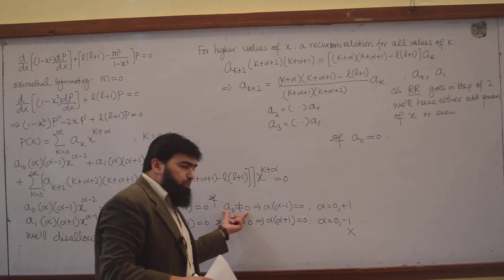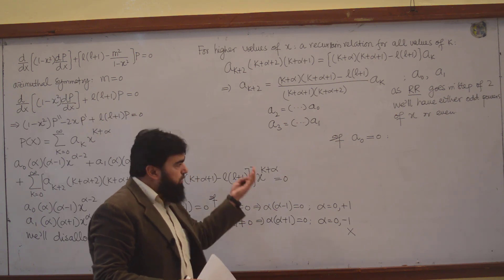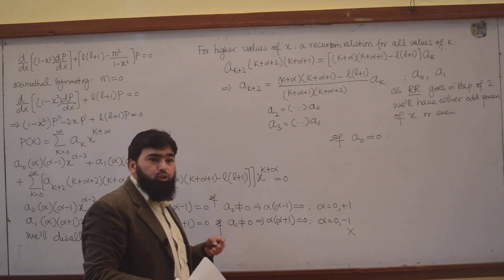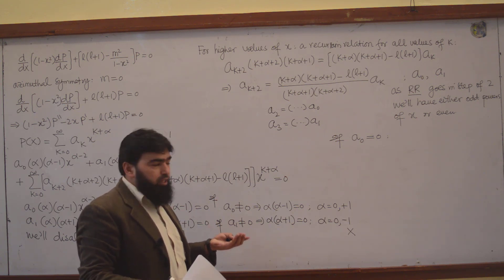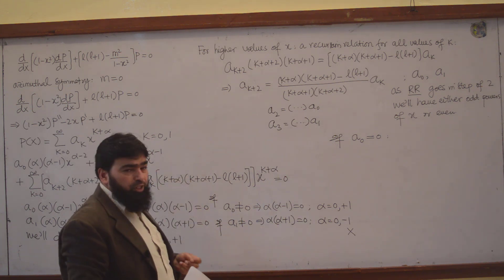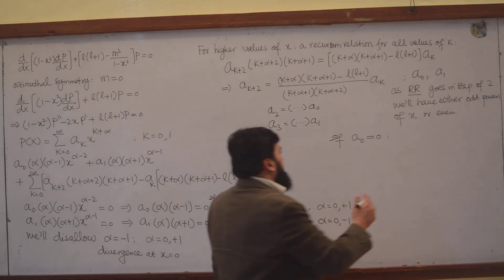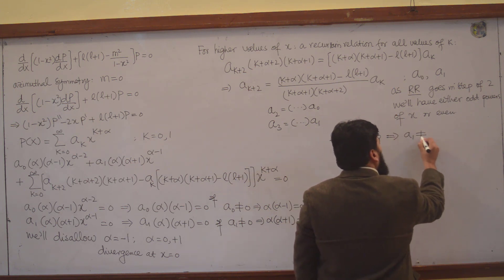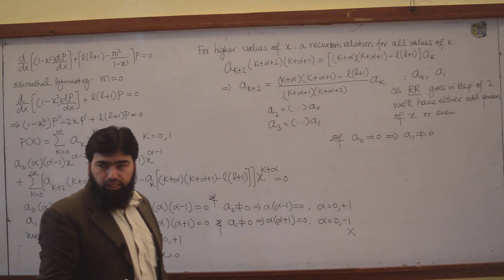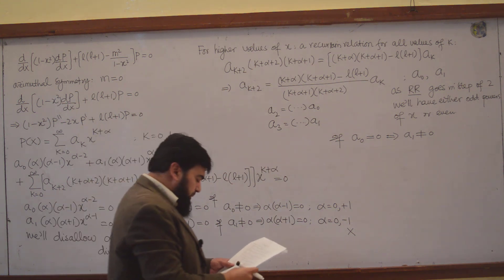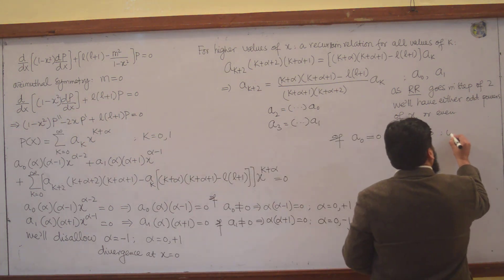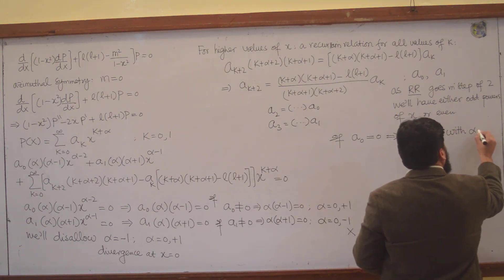If the even coefficients are equal to 0, then the odd coefficients should not be 0 in order to have the series maintain its shape. Otherwise you will have no solution. So I say that if a₀ is 0, then this implies a₁ should never be 0.